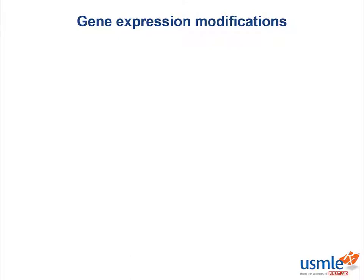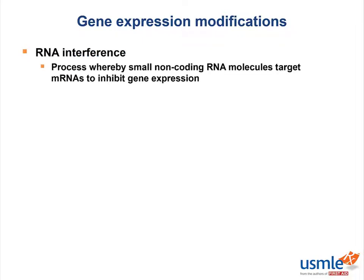Let's talk about a specific type of gene expression modification known as RNA interference. RNA interference is a process in which small non-coding RNA molecules target mRNAs to inhibit gene expression. Two types are microRNAs and small interfering RNAs.